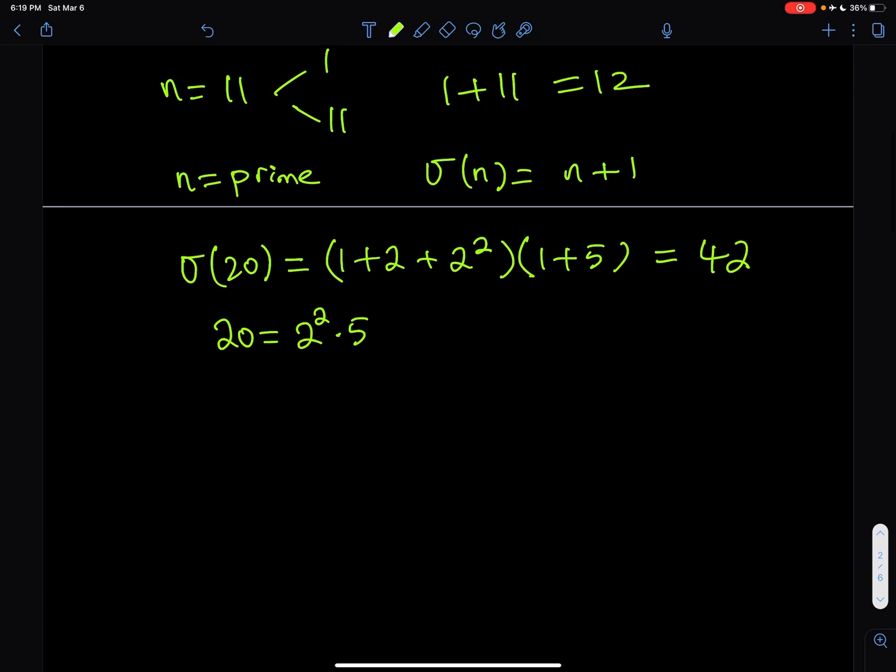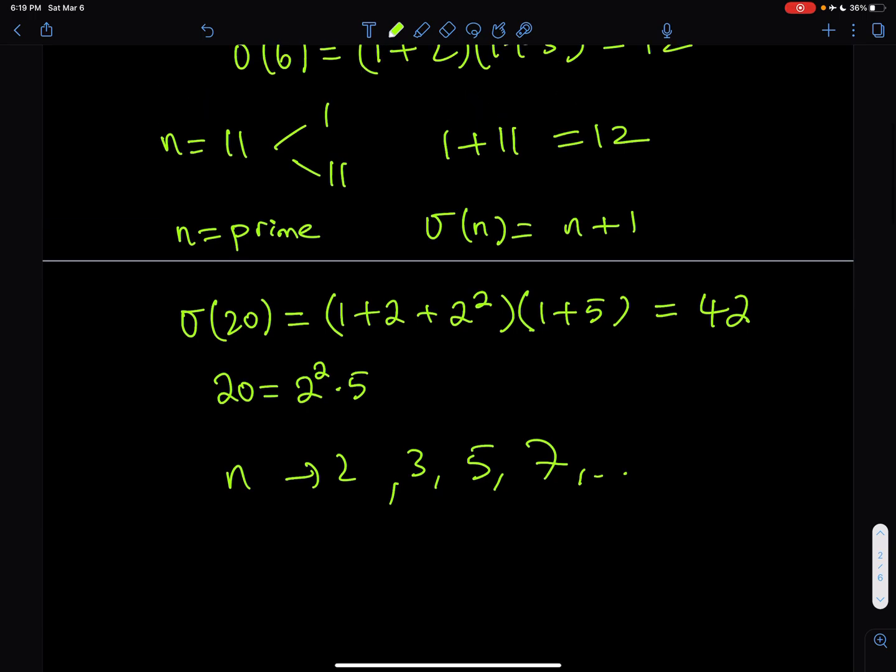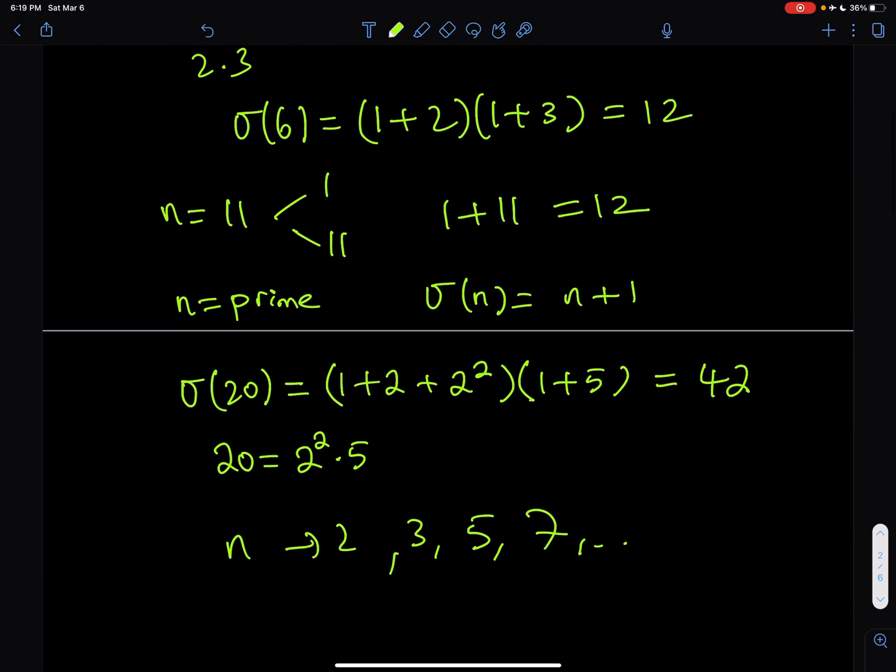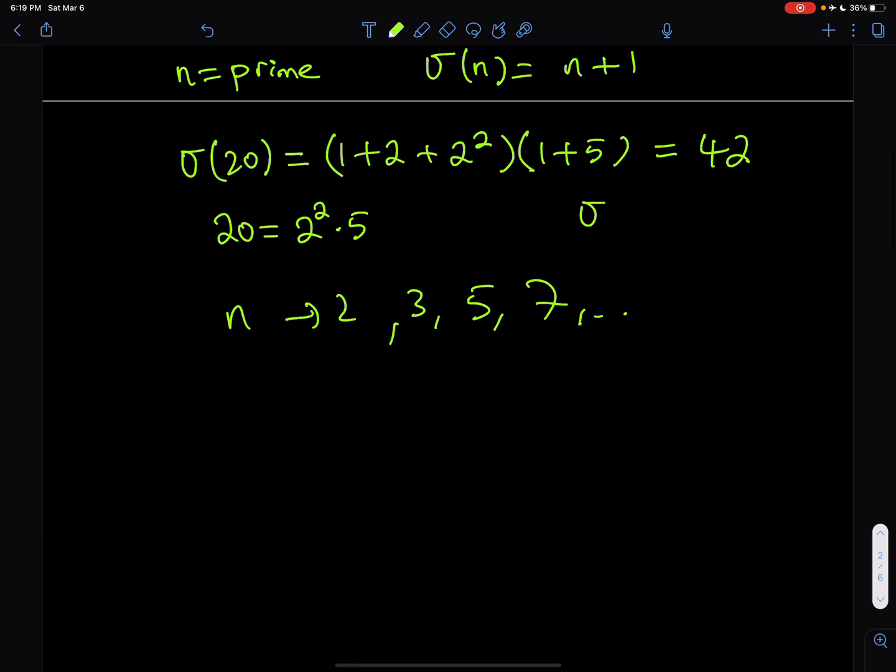Think about the prime factorization of n. What could it contain? So n could contain some 2s, some 3s, some 5s, some 7s. I don't know what they are. All I know is that the sigma of n is equal to 24. So how am I going to proceed? We're going to look at some possible formations.